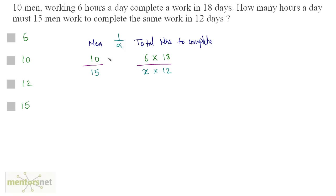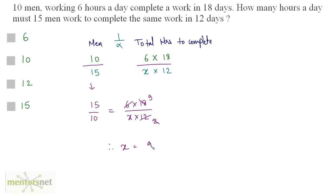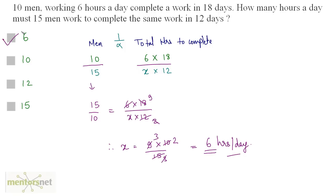Since this is an inverse proportion, we invert one of the ratios. We write 15 by 10 is equal to 6 times 18 by x times 12. Simplifying: 6 times 2 is 12 and 2 times 9 is 18, so x equals 9 times 10 by 15. Since 5 threes are 15 and 5 twos are 10, this equals 6. So, 6 hours per day is the answer — Option A.